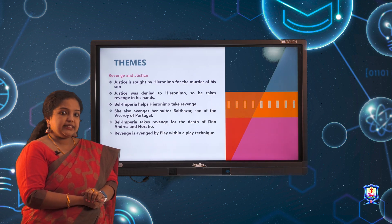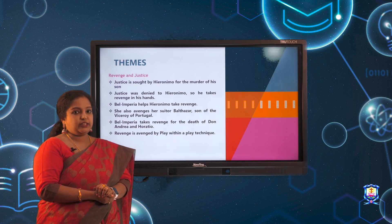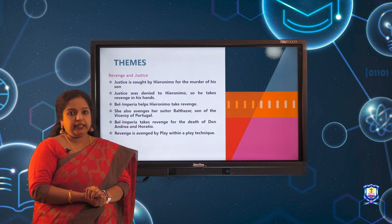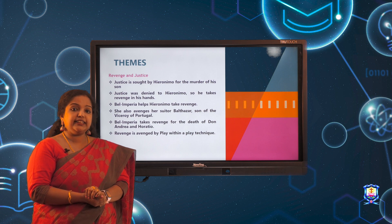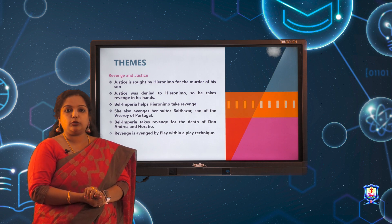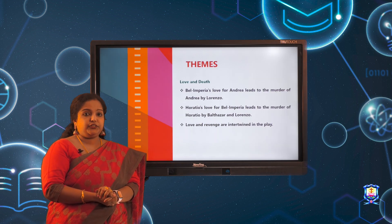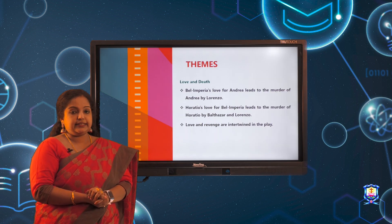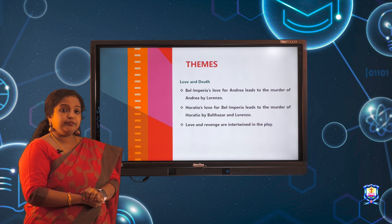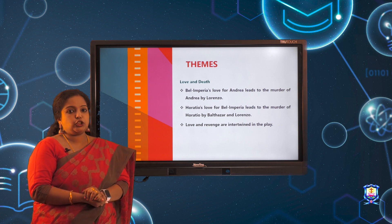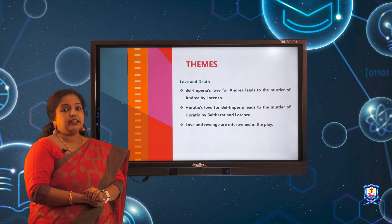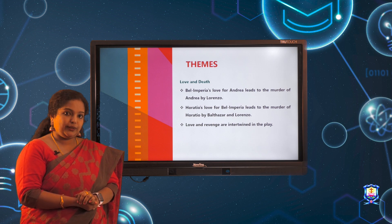Now let us see the themes embedded in the play. Revenge and justice are sought by two characters — Hieronimo and Belimperia — one for the death of Horatio and the other for the death of both Andrea and Horatio. Regarding love and death: Belimperia's love for Andrea is discovered by Lorenzo, who murders Andrea, and Horatio's love for Belimperia leads to his death by Lorenzo. Both love and revenge are intertwined in The Spanish Tragedy.